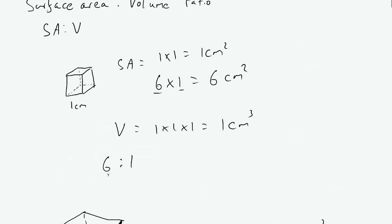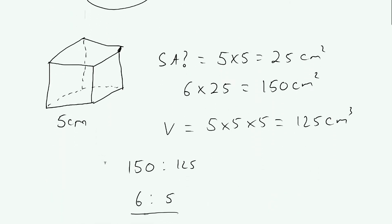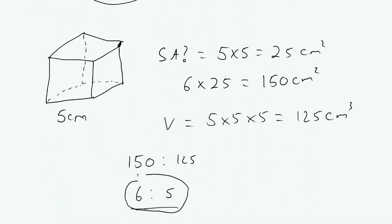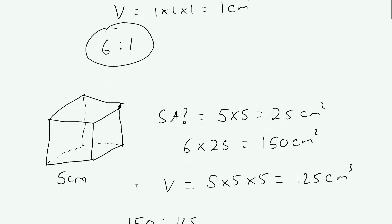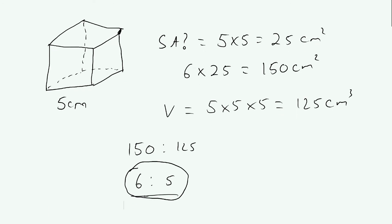Looking back, we have a six to one surface area to volume ratio for the small cube versus a six to five ratio for the large cube. The smaller cube has by far a greater surface area in comparison to its volume — five times greater in fact. As things get bigger, the surface area to volume ratio in general, if the shape is the same, is going to go down.